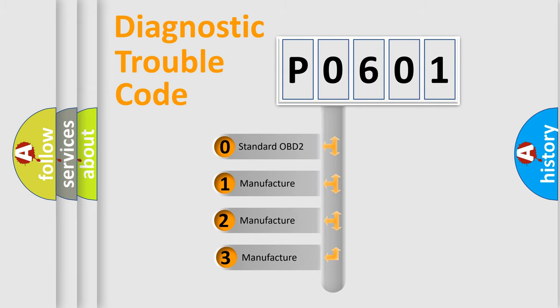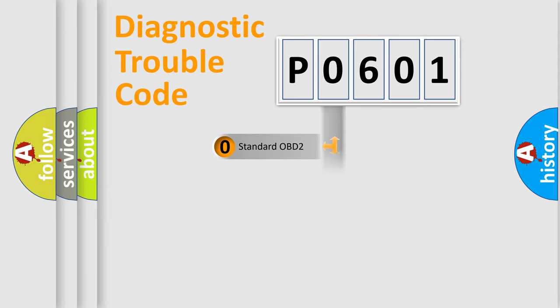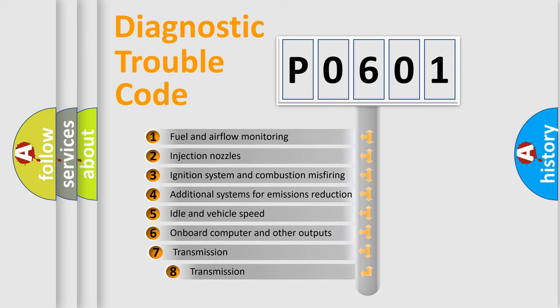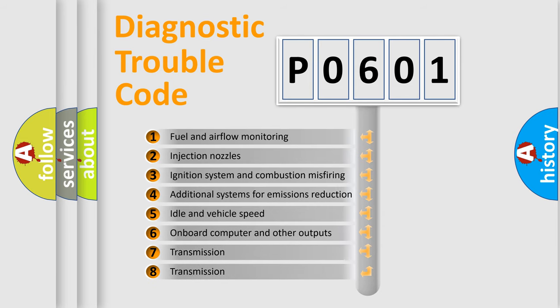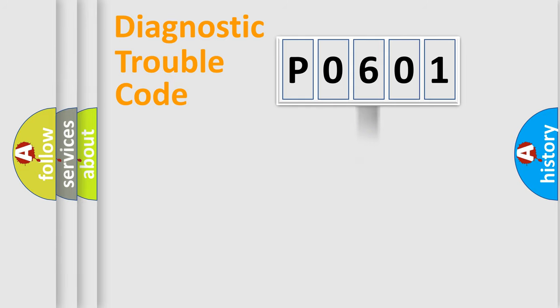If the second character is expressed as zero, it is a standardized error. In the case of numbers 1, 2, or 3, it is a more specific expression of the car-specific error. The third character specifies a subset of errors. The distribution shown is valid only for the standardized DTC code.